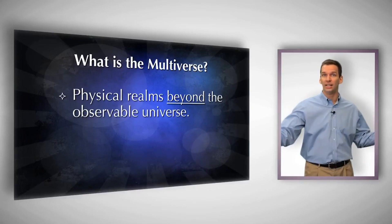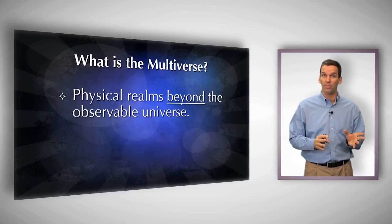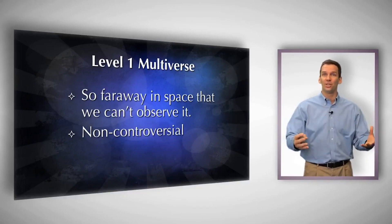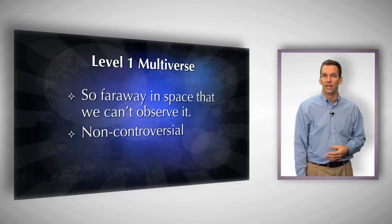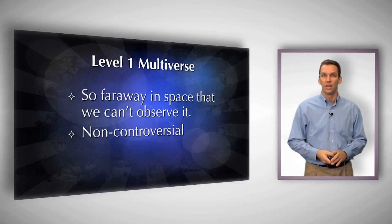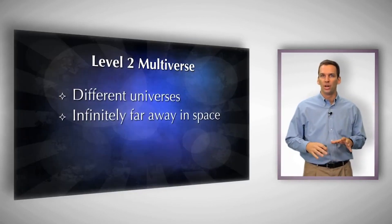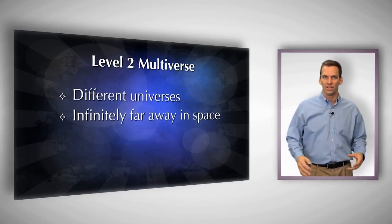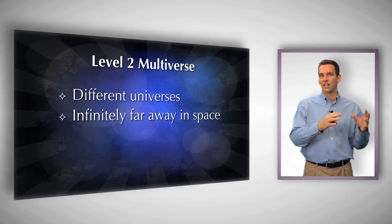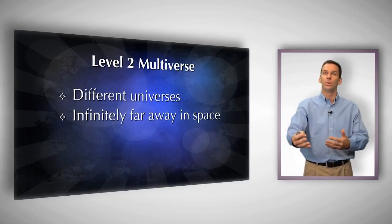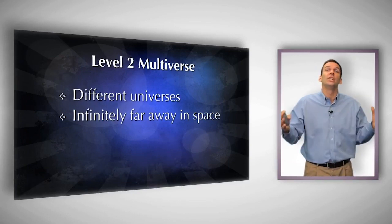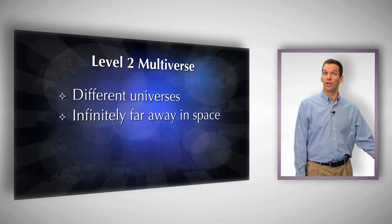The observable universe is all the stuff we could possibly see from Earth; the multiverse is anything beyond that region. There are two kinds popular in the scientific literature. The level one multiverse is just the other stuff that's like our observable universe — far enough away that we can't see it. That's a relatively non-controversial scientific multiverse; it would be very surprising if it didn't exist. The level two multiverse — which is what scientists typically mean — consists of other universes with different laws of physics, infinitely far away, different dimensionalities and constants, looking nothing like our universe.